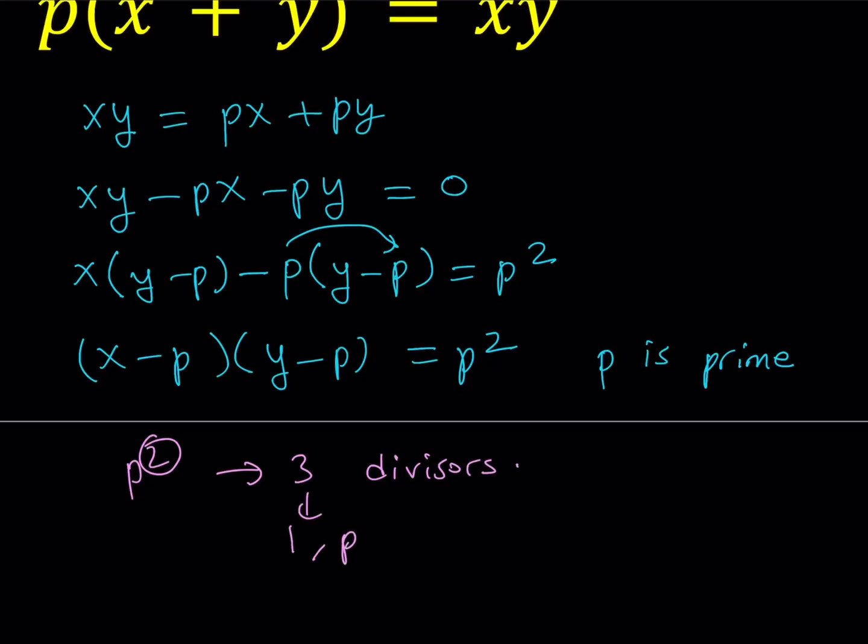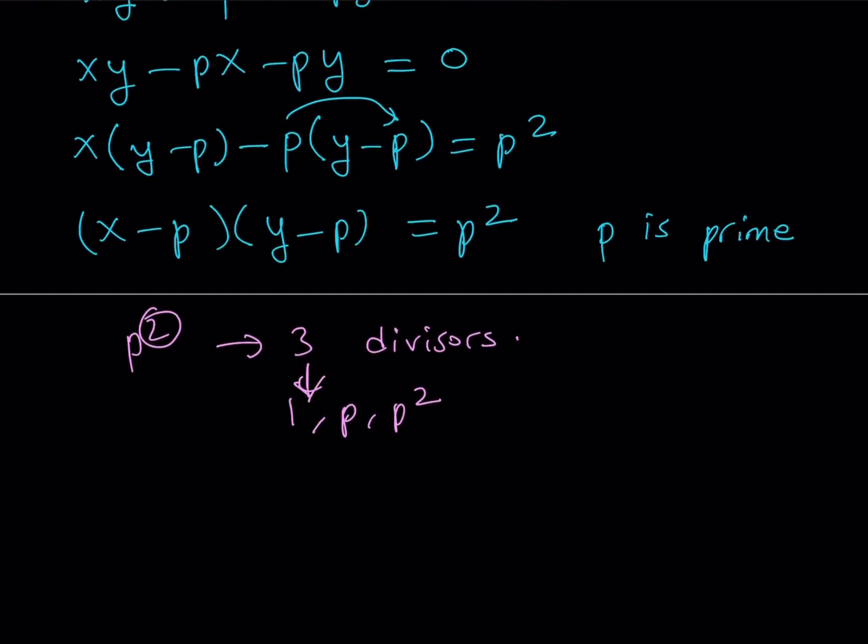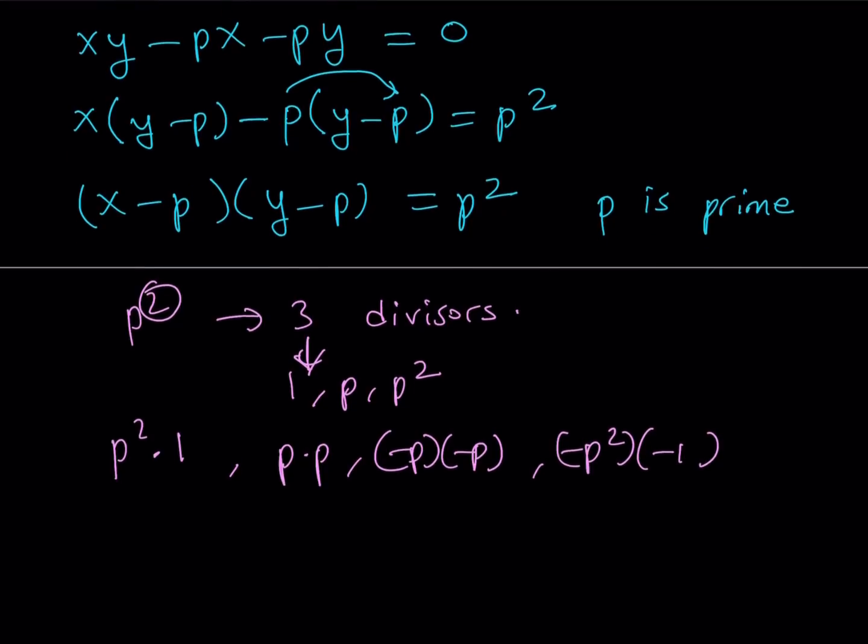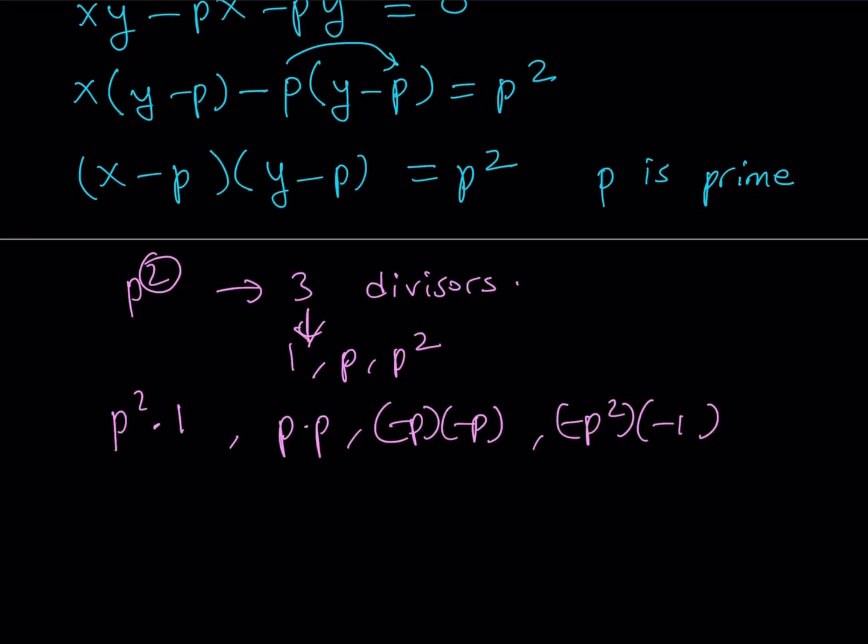So it only has three divisors. So that means that only three things can go, and they are one, P, and P squared. Of course, we're considering the positive divisors in this case, but we're going to be writing both for the solutions. So one way to factor this is P squared times one. Or we can do P times P. We can do negative P times negative P, since negatives are allowed. Or we can do negative P squared with negative one. So basically, I have those following methods for factoring this type of expression. Let's go ahead and consider each one. And then we're going to write the solutions. And then we're going to be looking at some specific examples.